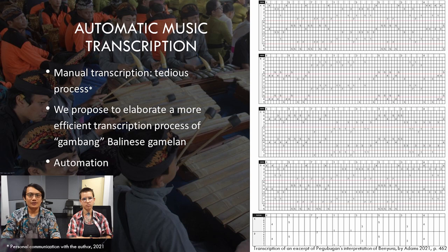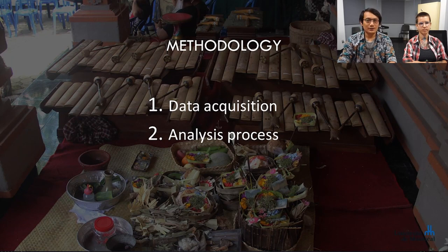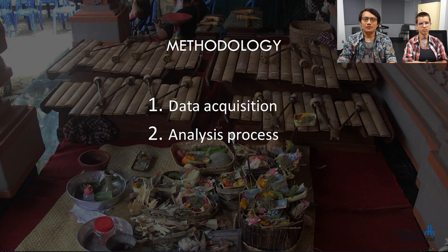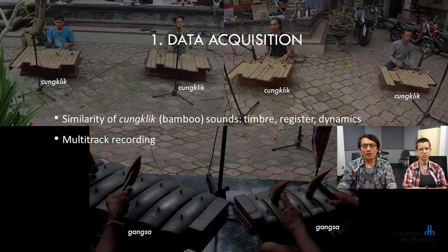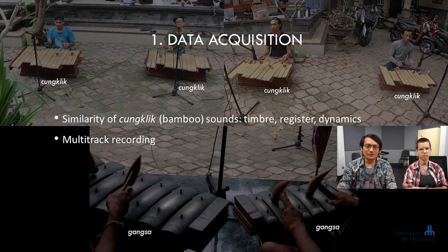Other music transcription systems have proven useful for Western music, and we hope an automation of gambang transcription will hold similar outcomes. To perform the automatic transcription, our tool requires audio recordings from a performing ensemble, and the sound files obtained are analyzed to produce a transcription. Our focus is on formal sections where interlocking patterns are performed, which are a major component of traditional pieces. These are particularly challenging for manual transcription due to the difficulty of source separation in such a dense and homogeneous texture, as cungklik instruments tend to blend because of their similar timbre, register, and dynamics. Multi-track recordings come as a solution for isolating these instruments.